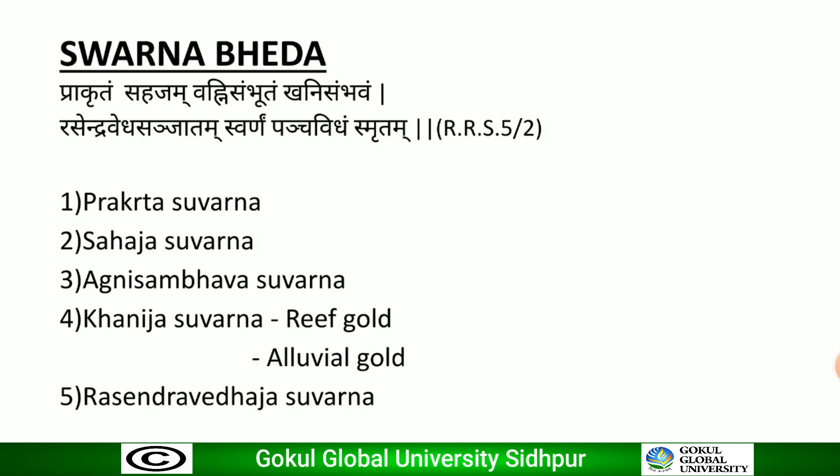There are mainly five types of Swarna specified in the classics. The first is Prakruta Swarna, second is Sahaja Swarna, third is Agni Sambhava Swarna, fourth is Khanija Swarna (comprising both reef gold and alluvial gold), and the fifth is Rasendra Vedaja Swarna. The first three are named after myth or mythology. The fifth type is believed to be obtained by converting lower metals into gold with the help of mercury, but is not practically possible. Only Khanija Swarna is available on this earth through free mining — reef gold mined from gold-rich rocks, and alluvial gold found in rivers.